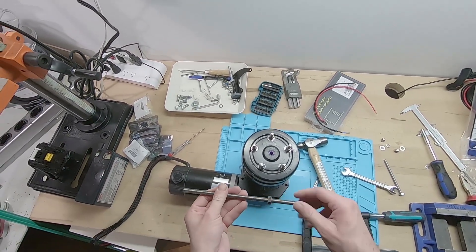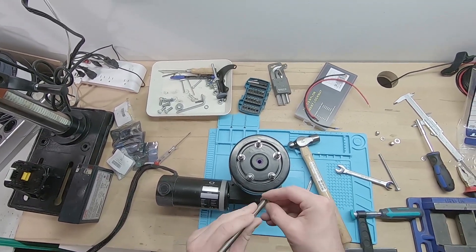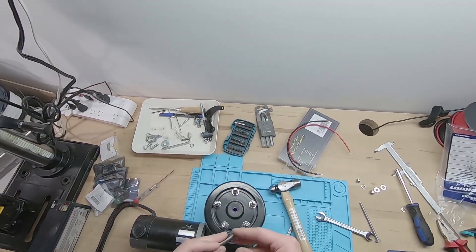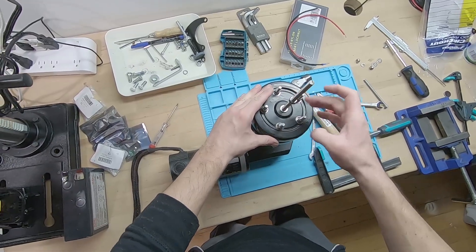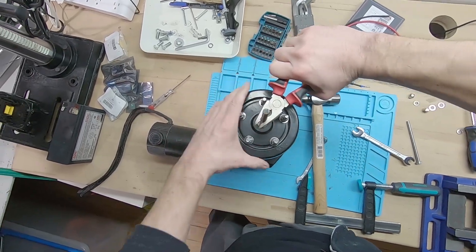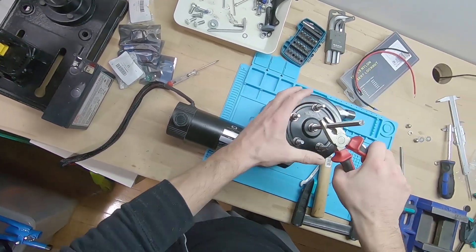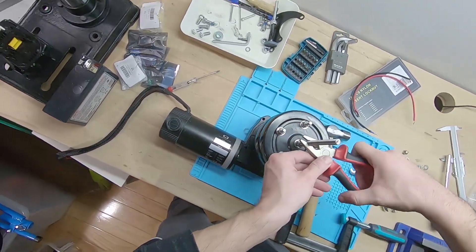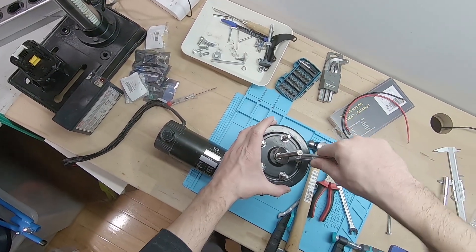And then I mounted everything back to the motor. Then I used a piece of threaded rod to mount everything onto the axis. I used some washers.